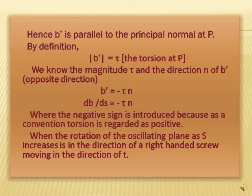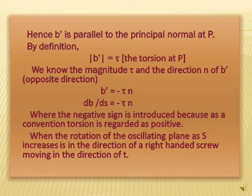Therefore b′ is a vector perpendicular to t and lies in the rectifying plane, so b′ is parallel to the principal normal at p. By definition, |b′| = τ, the torsion at p. We know the magnitude τ and the direction n of b′, so b′ = −τn, giving db/ds = −τn. The negative sign is introduced because by convention, torsion is regarded as positive when the rotation of the osculating plane as s increases is in the direction of a right-handed screw moving in the direction of t. Thus part two is derived.